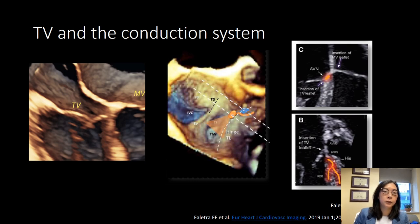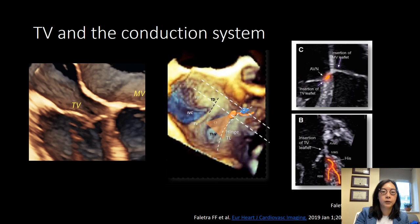The tricuspid valve is very close to the conduction system. This is why surgeries involving the tricuspid valve can lead to conduction system abnormalities. In a cross-sectional cut plane through the crux of the heart, you can see the intra-atrial septum, the septal insertion point of the mitral valve leaflet, the septal insertion of the tricuspid valve leaflet, and the interventricular septum. There is a gap between the mitral valve insertion point and the tricuspid valve insertion point — this gap is the atrioventricular membranous septum. The AV node sits in this atrioventricular membranous septum, and then connects down to the His bundle as well as the left and right bundles.